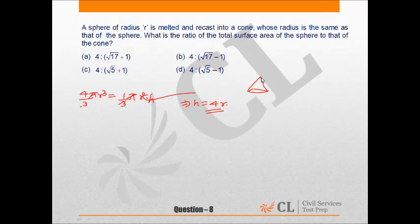So the slant height of the cone would be equal to square root of radius squared plus height squared, and the height of the cone is equal to 4R. So here it would be 16R squared, that is equal to square root 17R squared.